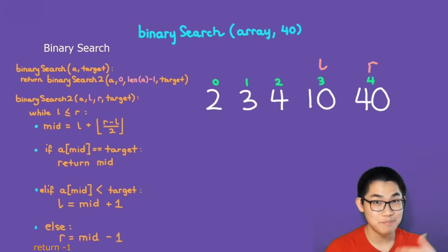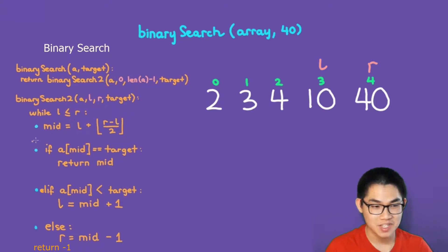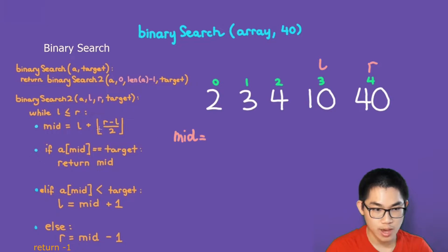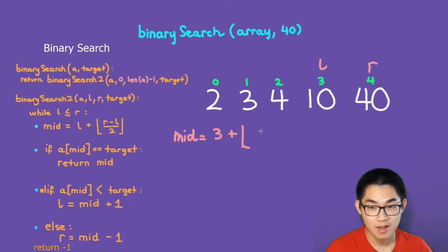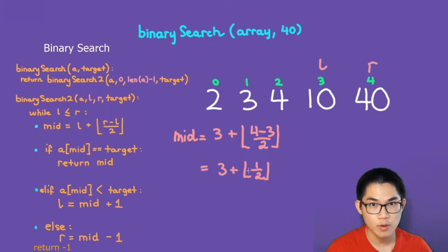Going back to the top: is L less than or equal to R? Yes. So we calculate the mid. Mid equals L (which is 3) plus floor of (R minus L) over 2, so 4 minus 3 divided by 2. We have 3 plus 1 over 2. When you divide 1 by 2 you get 0.5, and 0.5 rounded down is 0. So at the end of the day, mid is just 3.